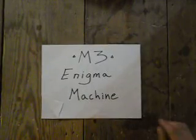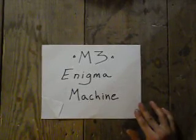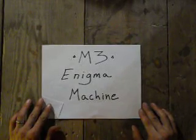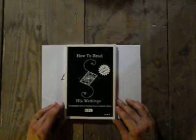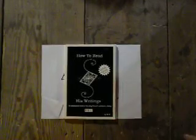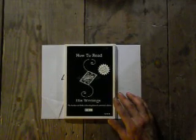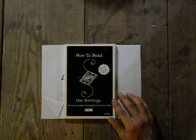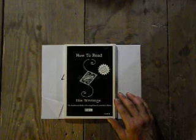In order to get into Ed Leedskalnin's works using an M3 Enigma machine, you're going to need to know a few things about an Enigma machine. I found these settings myself using a few clues from this book, How to Read His Writings, The Unauthorized Guide to Decoding Edward Leedskalnin's works. It's written by Edward Marlinski and I used some of the clues that I found in this book to find these Enigma machine settings.